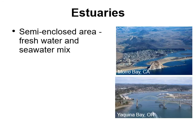Estuaries are at least semi-enclosed areas where fresh water coming from the land mixes with seawater coming from the ocean. For instance, Morro Bay in Central California has fresh water entering it in the form of rainfall and ocean water coming in from the ocean. A little further north, Yaquina Bay in Oregon has the Yaquina River taking water into the bay, along with ocean water — so there's a mix of fresh water and seawater inside of estuaries.